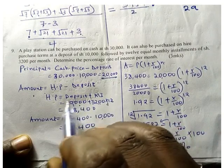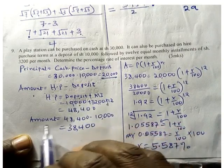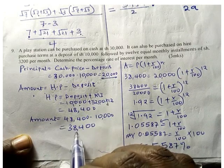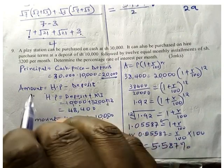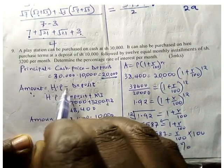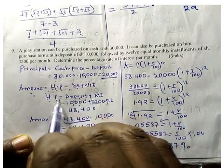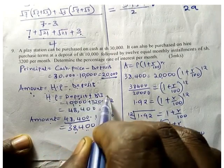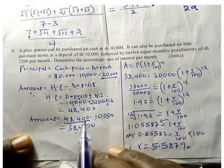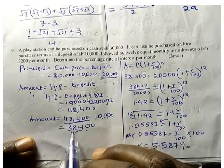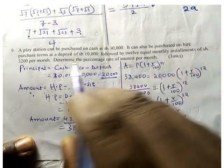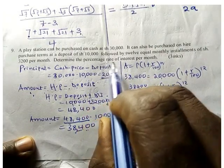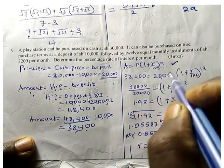So the amount is going to be 38,400, because the hire purchase is monthly installments plus deposit. Our amount is 38,400. Now, because we have been asked to find the percentage rate, we apply the formula.